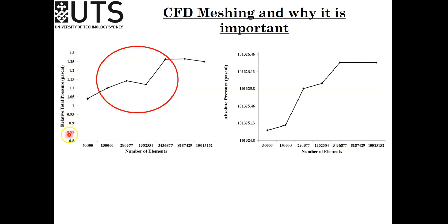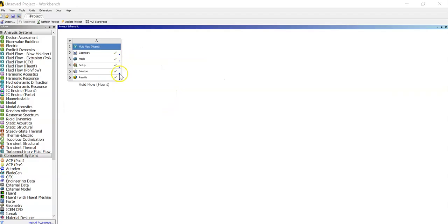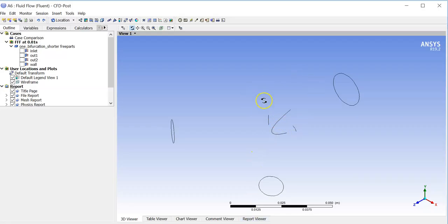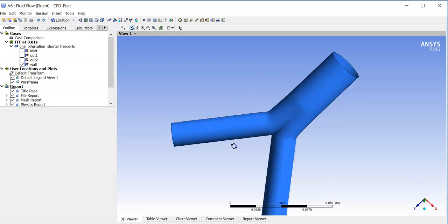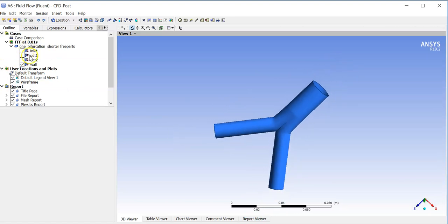You need to define the mesh, set all the boundary conditions, and everything. Once you have done the simulation — once your solution is converged — stop it and check any variable. I'll show you that here. I have this solution which is already converged. I clicked on Results and I get this window. This is my wall. I can calculate the pressure at the outlet.